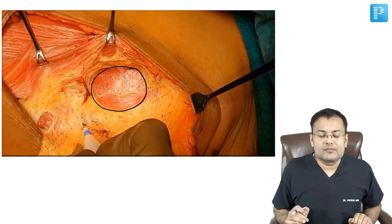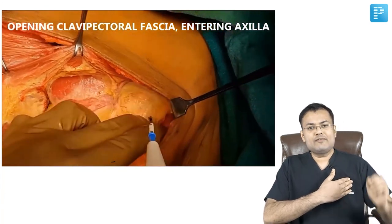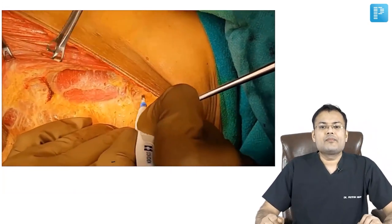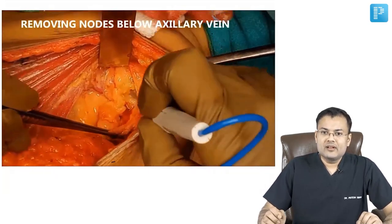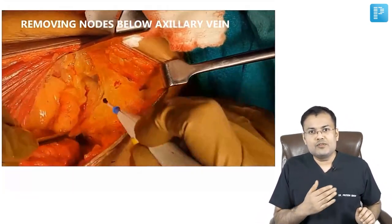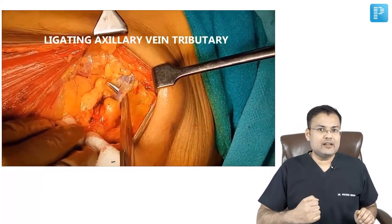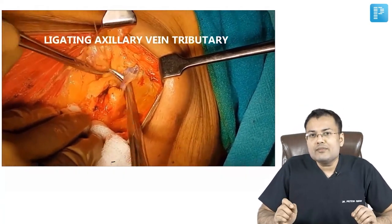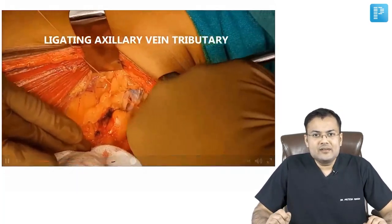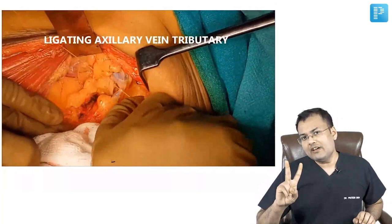We are removing the inter-pectoral nodes, which are located between pectoralis major and minor. After that we have to open the clavipectoral fascia and enter into the axilla. The lymph nodes are being removed located below the axillary vein. During dissection we found a tributary of the axillary vein which we have to ligate and divide.